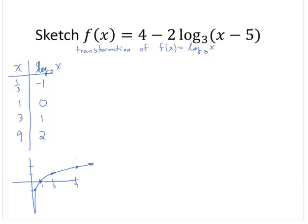So now I've got to think of the shifts. The x - 5, that's a shift right 5. The 4, well wait, what about this -2? The -2, that's a scale factor and a flip. And then finally the 4 is a shift up 4 units.